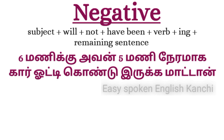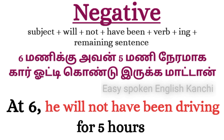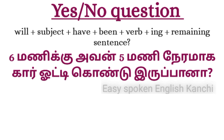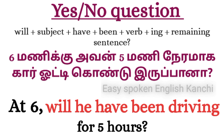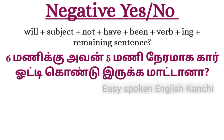For the negative sentence: 'At 6 o'clock, he will not have been driving for 5 hours' — will not have been + verb-ing. Note: 'will' stays, then 'not,' then 'have been.' For yes/no question: 'At 6, will he have been driving for 5 hours?' — confirming whether driving happened up to that point.